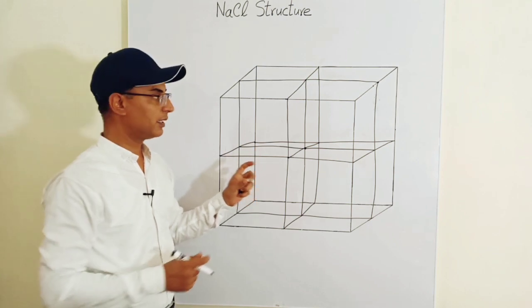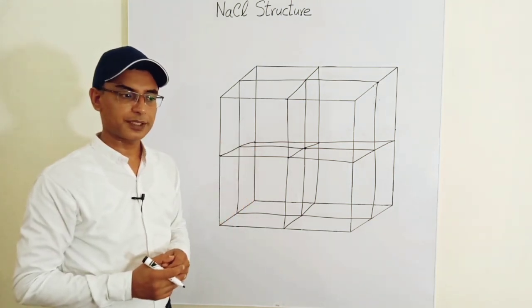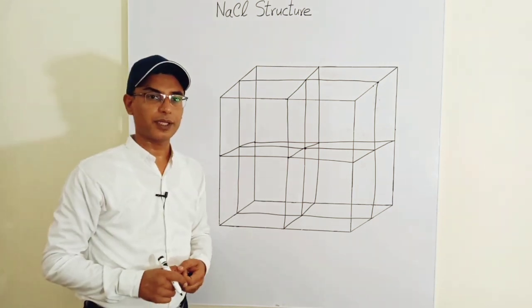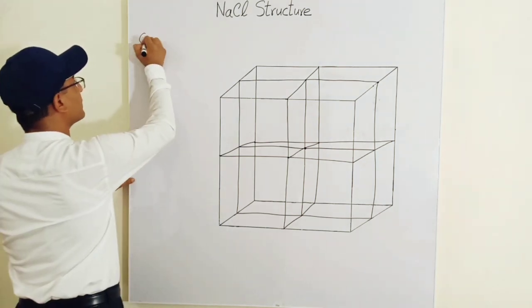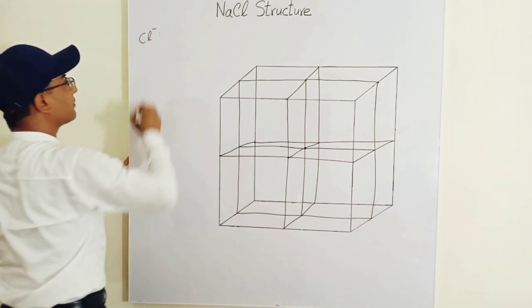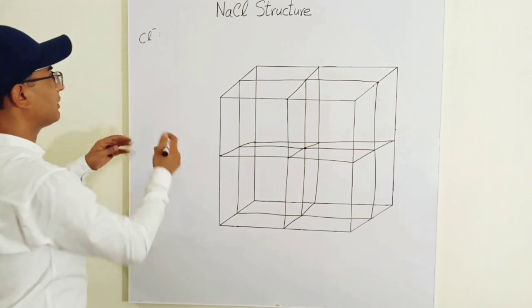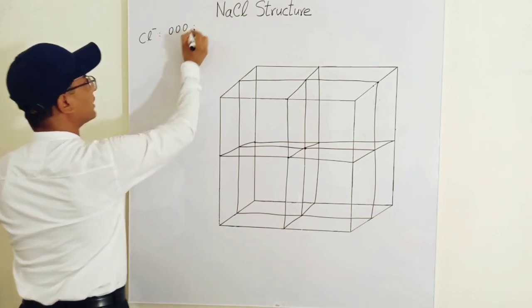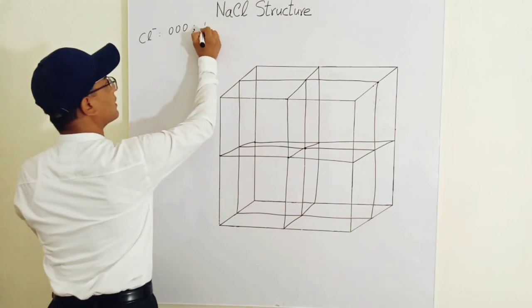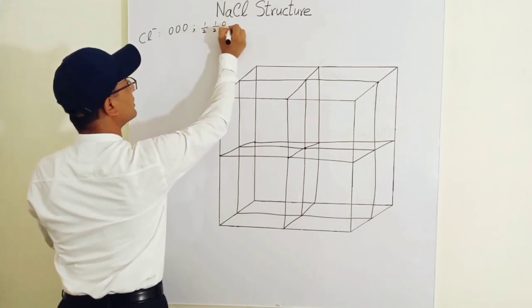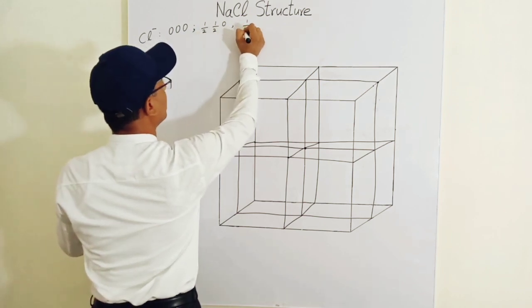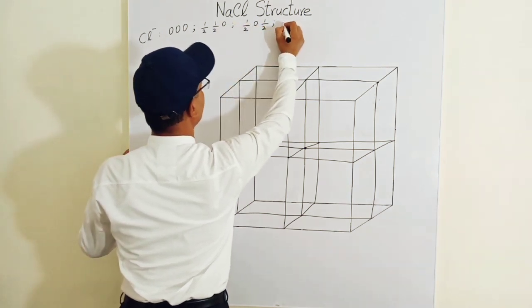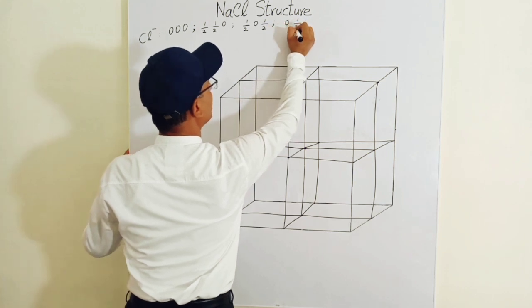Now this is a lattice structure, just because it is made up of lattice points. We will now go on to locate the positions of sodium and chlorine ions. If I take the chlorine ion first, the positions of the chlorine ion are: (0, 0, 0), then (½, ½, 0), the third position is (½, 0, ½), and the last position of the chlorine ion is (0, ½, ½).